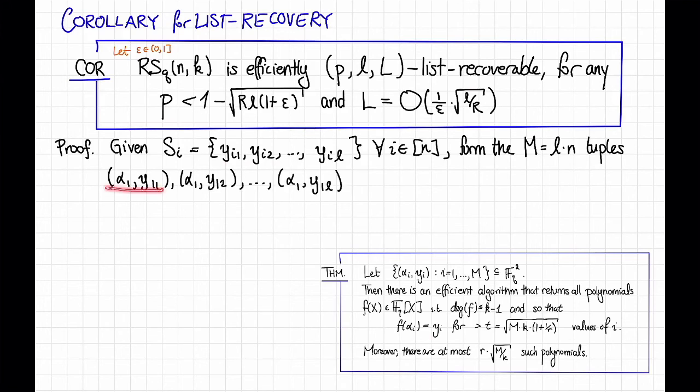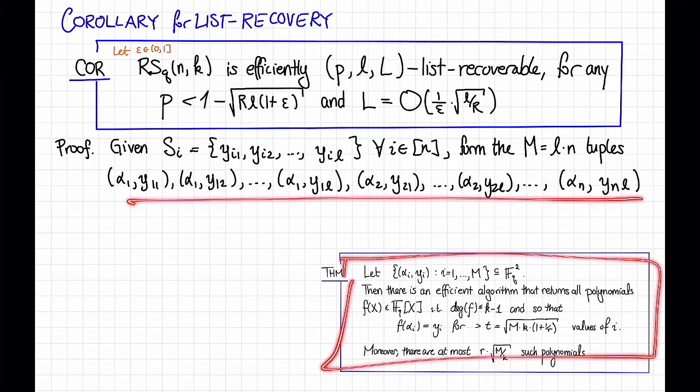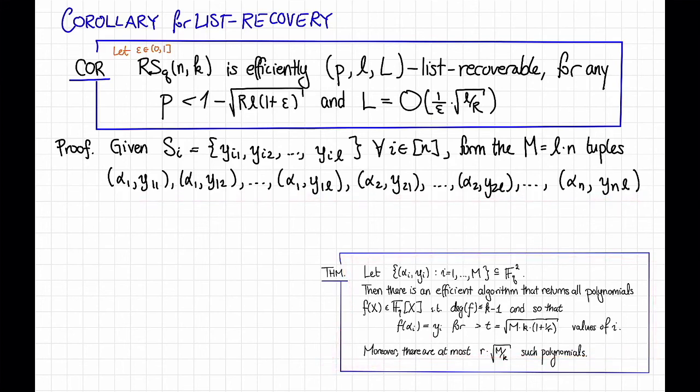So we'll take alpha 1 y1 1, alpha 1 y1 2, dot dot dot, all the way up to alpha 1 y1 l, and then we'll take alpha 2, y2 1, and so on, all the way up to alpha n, y n l. Then we are going to apply this theorem with those tuples and with r equal to 1 over epsilon.